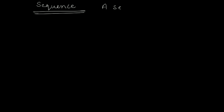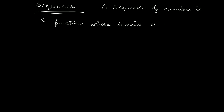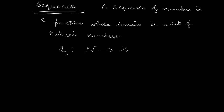A sequence of numbers is a function whose domain is a set of natural numbers. So, sequence is a function whose domain is a set of natural numbers. Let's suppose a, it is a sequence going from N to X. Here N denotes the set of natural numbers and a is the sequence. N is the domain of the function and X is the co-domain.